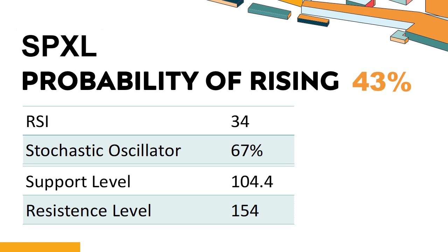SPXL's short-term support level is 117.3. If it falls below 117.3 during the session, it will have a chance to test 104.4. SPXL's short-term resistance level is 140.9. If it breaks through 140.9 during the session, it will look up to 154.